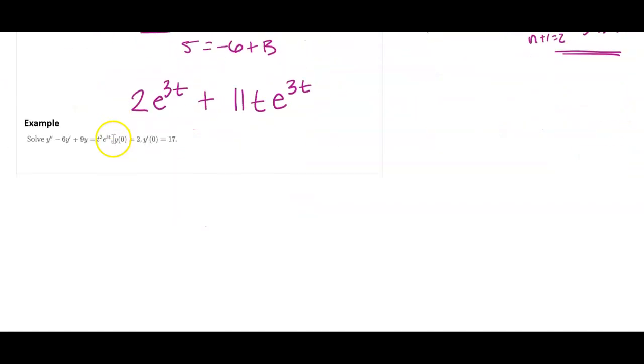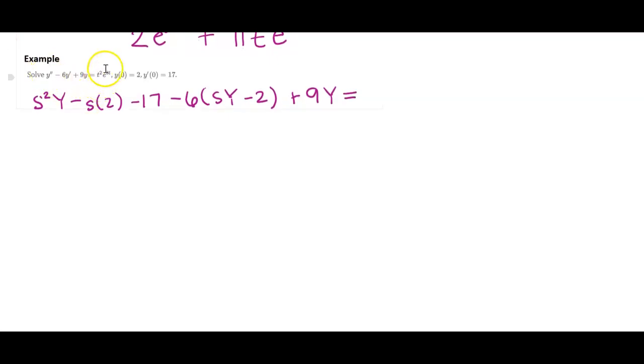Let's look at solving a full differential equation here. So let's take the Laplace. I'm going to have s squared capital Y minus s times 2 minus 17, minus 6 times sY minus 2, plus 9 big Y equals, now I need to have the Laplace of t squared, that's 2 over s cubed, but then I'm going to let s go to s minus 3, so that's going to be 2 over s minus 3 cubed.